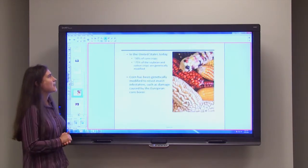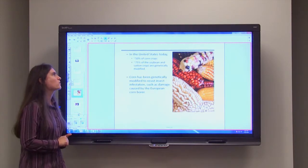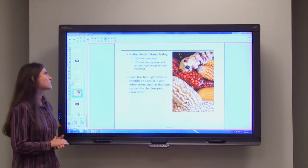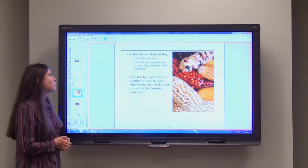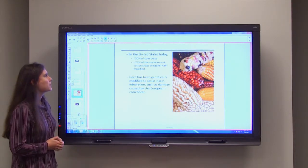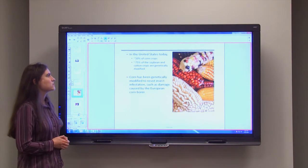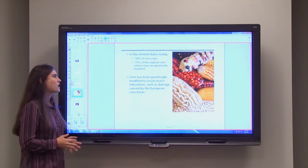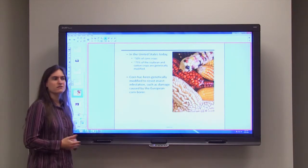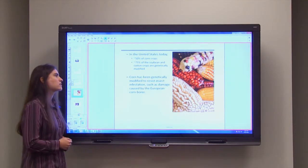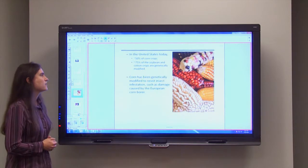So in the US, actually about 50% of our corn crops and about 75% of our soybean and cotton crops are genetically modified. And one reason for this is that our corn plants were modified to be more resistant to an insect infestation from the European corn borer. But the corn is perfectly safe as far as we know. And we're able to consume it, use it in our daily life, no problems.